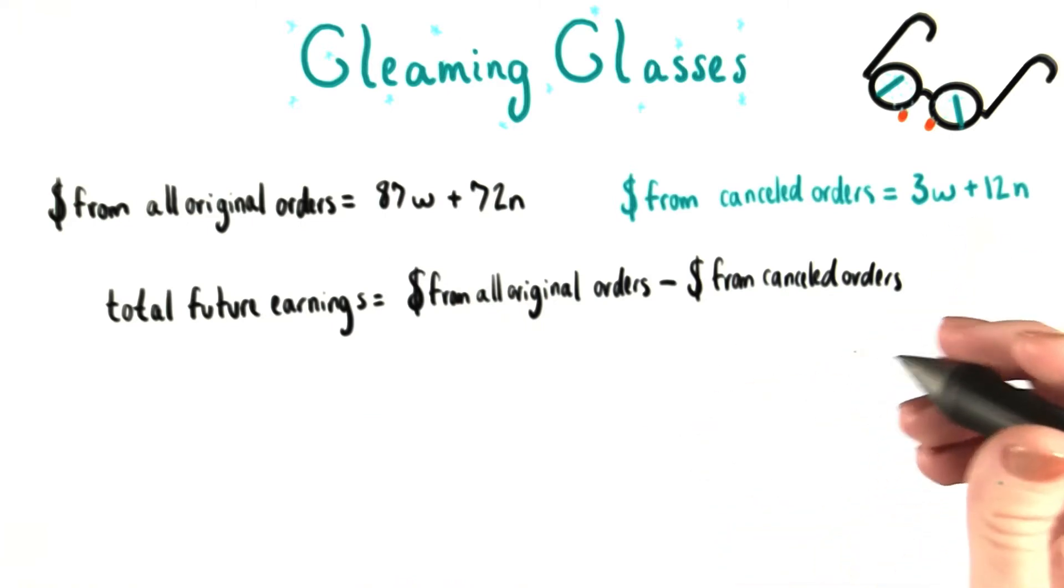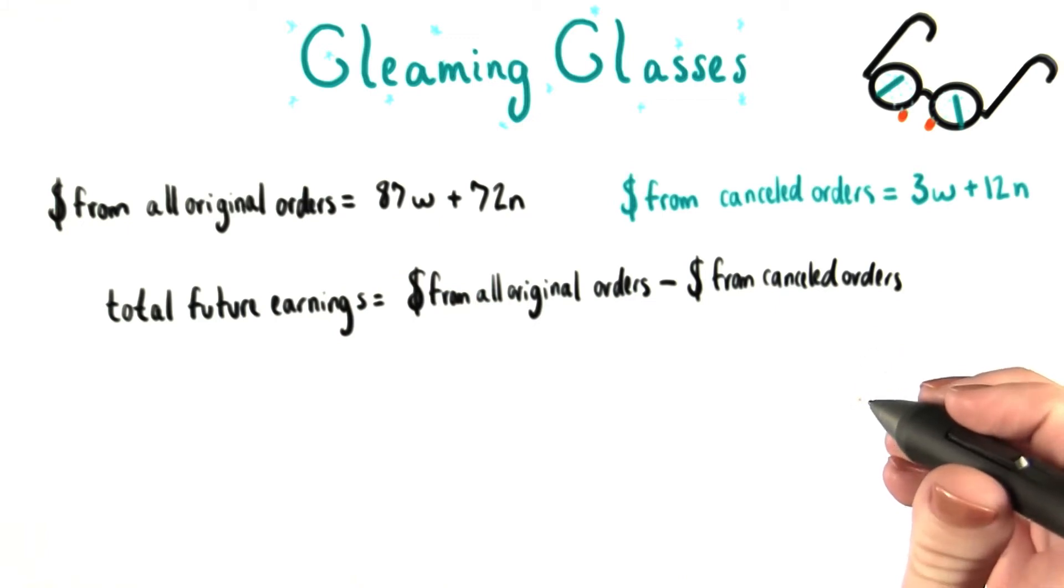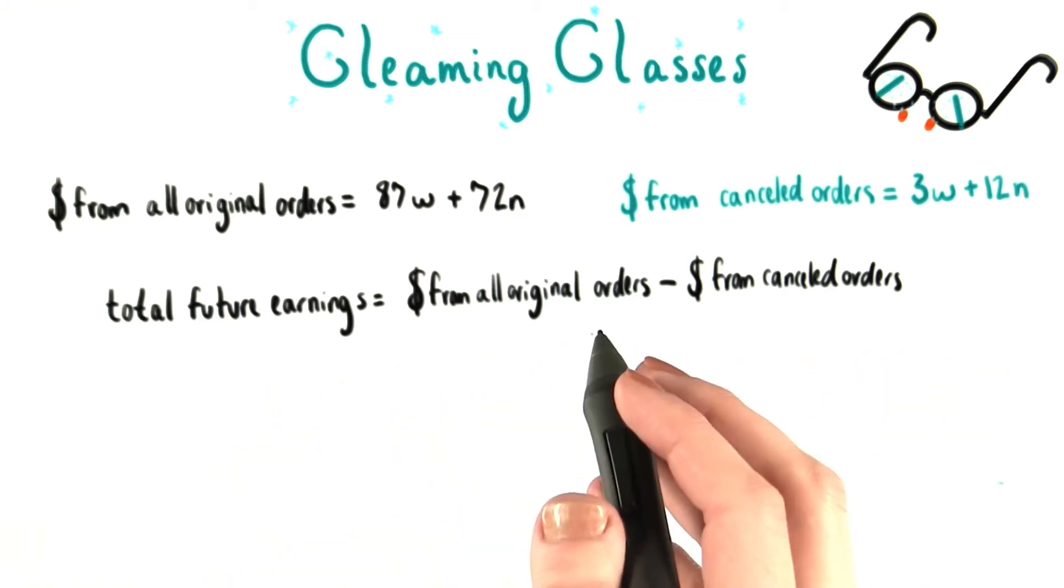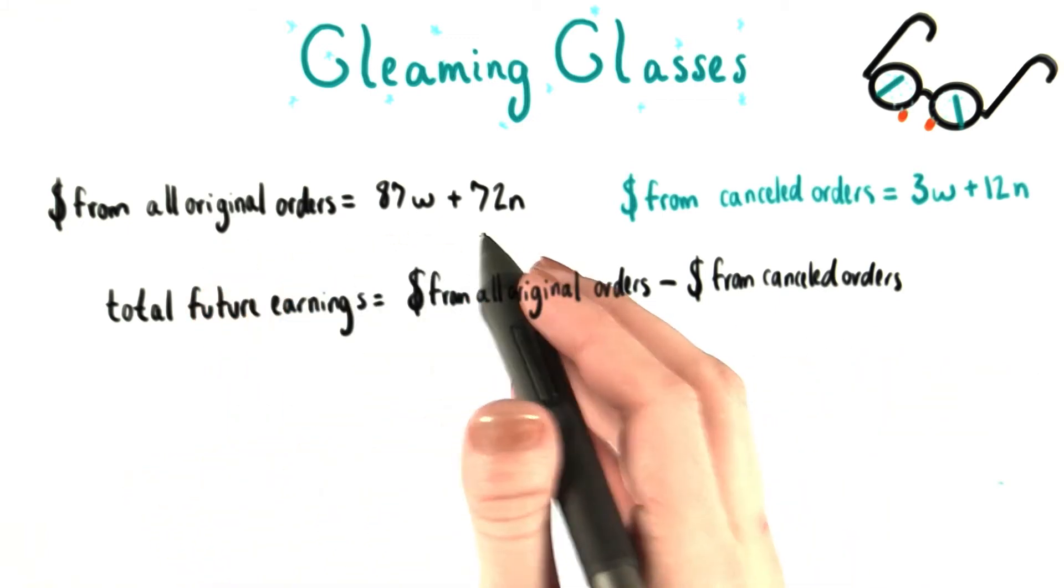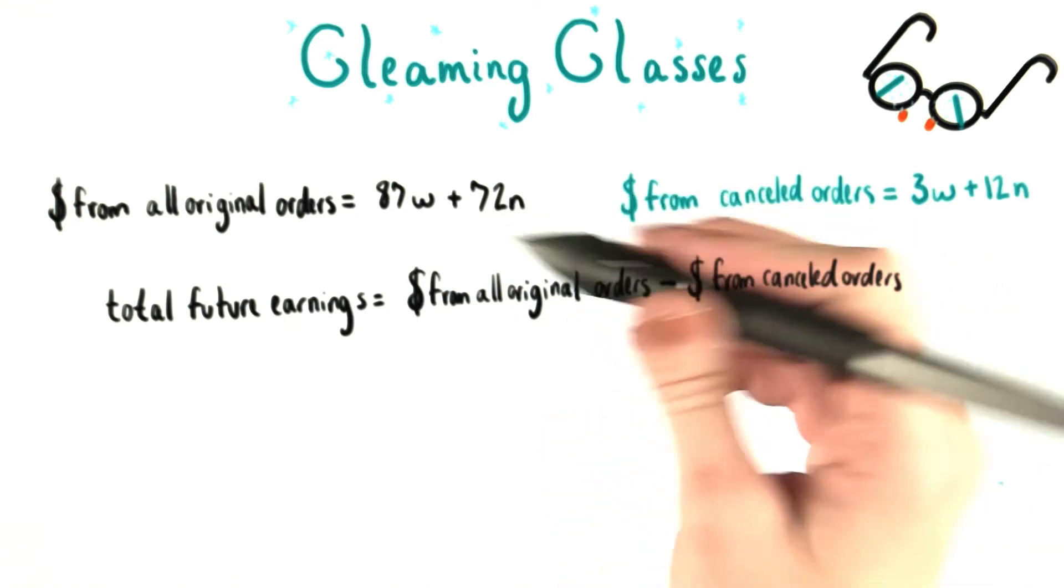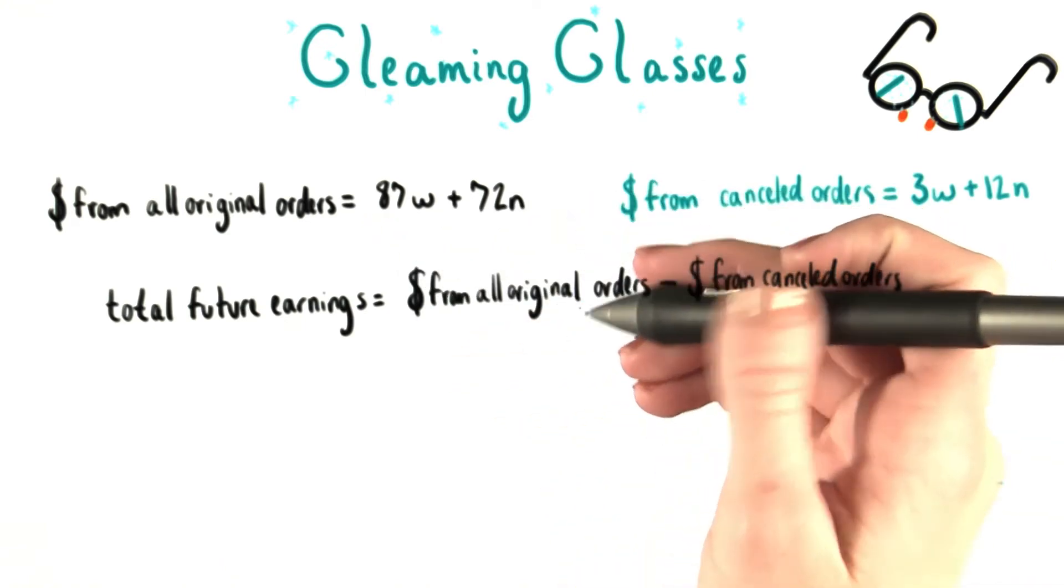As we learned about substitution very early on in the course, if we have a system of equations that we know is allowed to work together, and one quantity in one of the equations is equal to another quantity in another one of the equations, we can replace that quantity with the other way to express it.